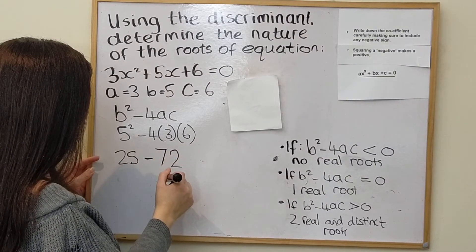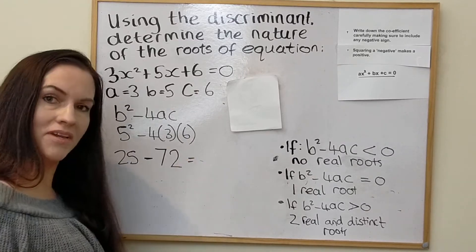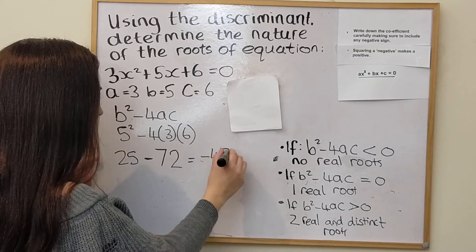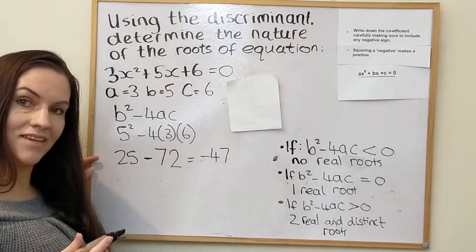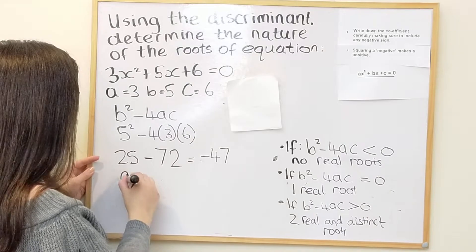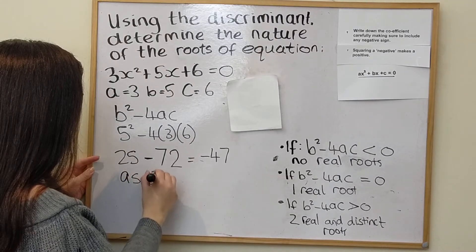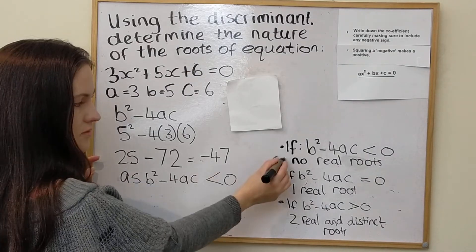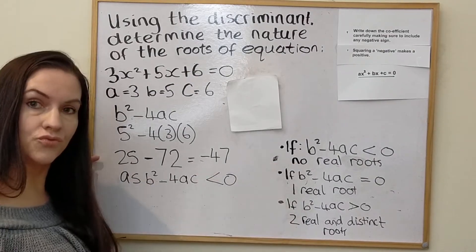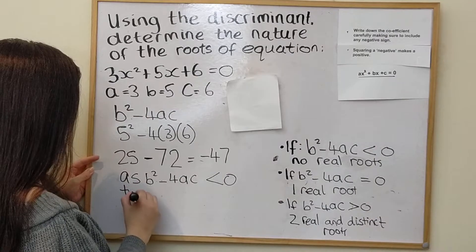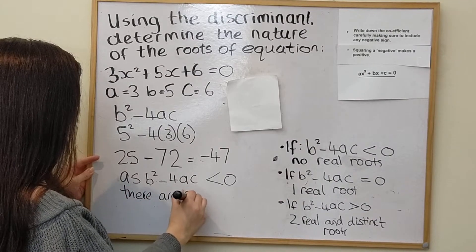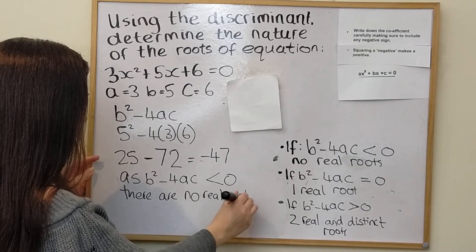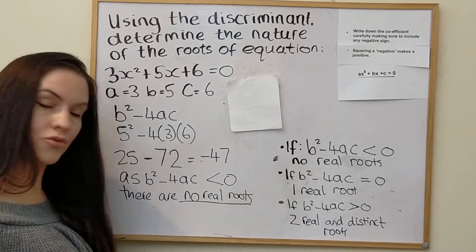5 squared is 25, and we take away 4 times 3 which is 12, times 6 is 72. So we get 25 minus 72, which gives us minus 47. Since b squared minus 4ac is less than zero, there are no real roots.